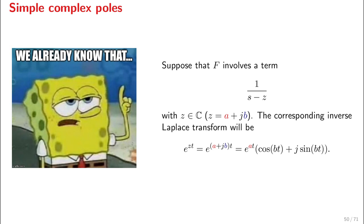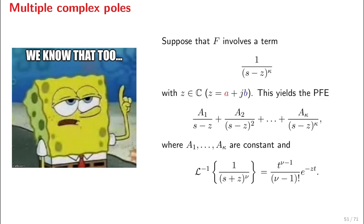Let me say that again. If we have a term of the form 1/(s - z), then this gives rise to products of exponentials with trigonometric functions. If we have now a pole of multiplicity κ, where κ can be one, two, three, whatever, then this yields a familiar partial fractions expansion.